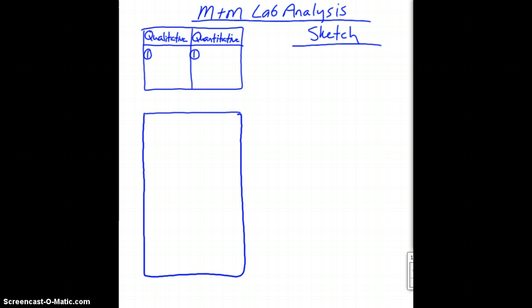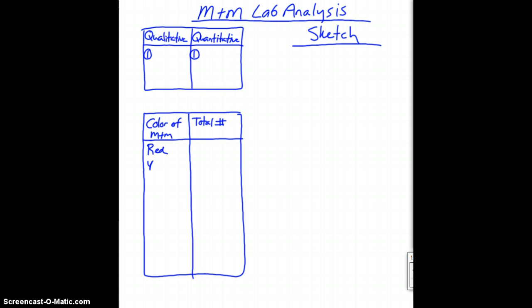Data table number two says we need to create a data table that's going to list the colors of the M&M's and the number of M&M's for each color. I'm going to write in here 'Color of M&M's' and on the other side of the column 'Total Number.' Below that, I'm going to write in each color: red, yellow, blue, green, brown, and orange. Next to that is where we'd actually put our totals — that's going to come after we actually count them.